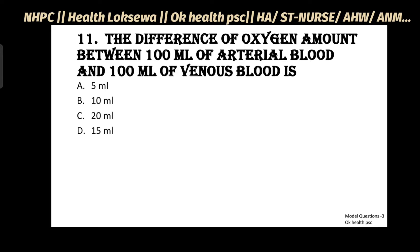The difference of oxygen amount between 100 ml of arterial blood and 100 ml of venous blood. Answer: A.